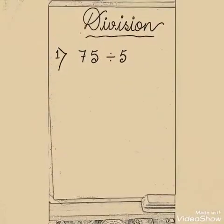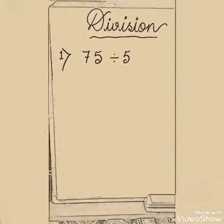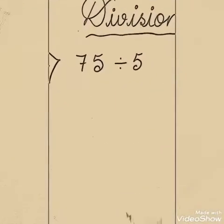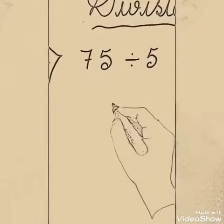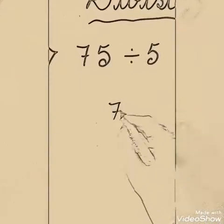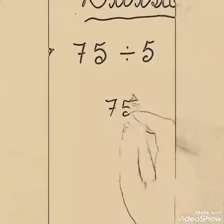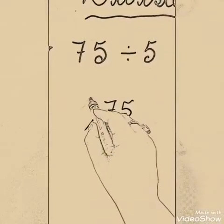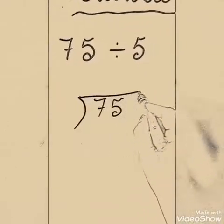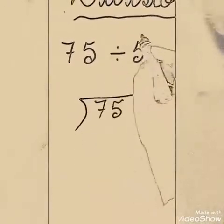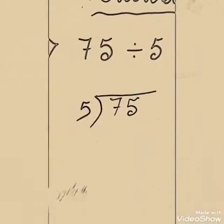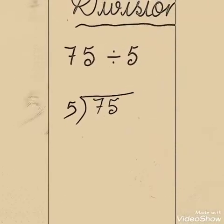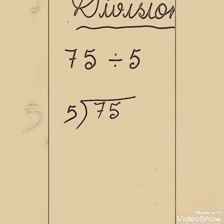Here is our first sum: 75 divided by 5. So let's start. First we will write the dividend, 75, in the middle. We will put the division symbol and then we will write the divisor outside this. 5 is our divisor here.